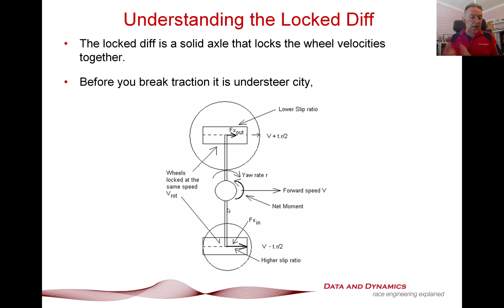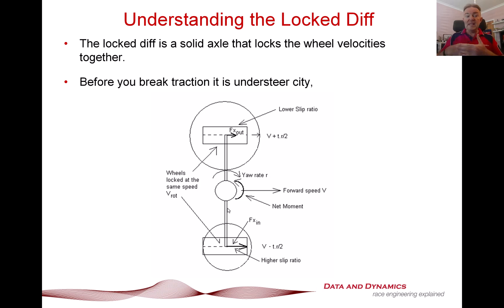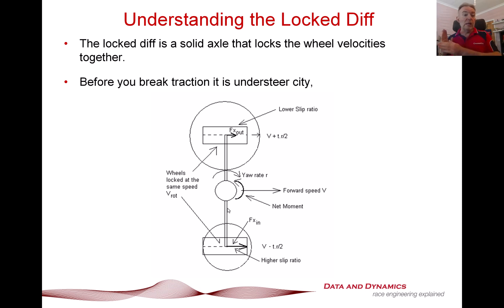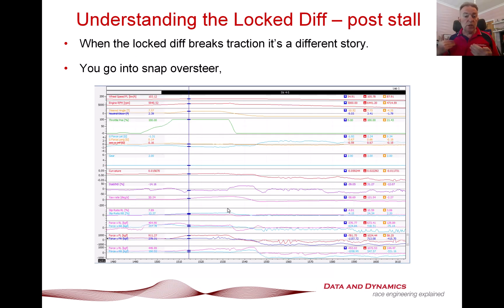We really have a tale of two competing things here. Before we break traction, you're dealing with understeer city. This figure from my book, The Dynamics of the Race Car, covers this in depth — including things like the critical locking ratio. Before we break traction, the slip ratio on the inside wheel is going to be larger than the slip ratio on the outside wheel. Particularly at low load transfers, it's understeer city.